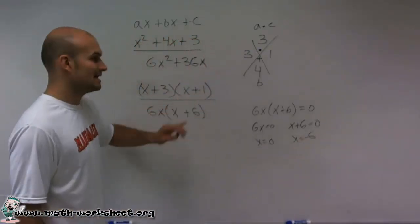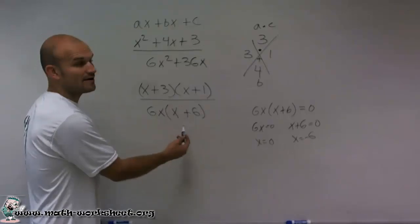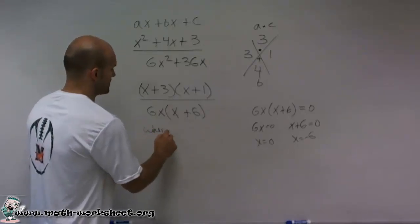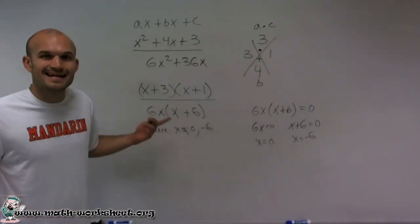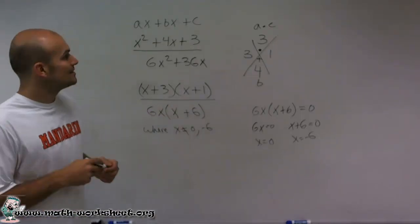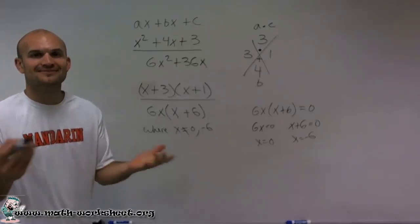So therefore, my final answer is going to be this simplified version, where x cannot equal 0 or negative 6, as that will make my denominator 0. So there you go. Hope that helps you guys out. Enjoy. Thanks.